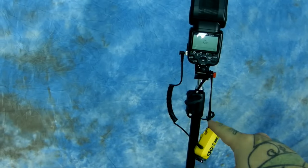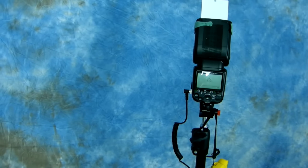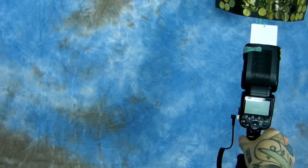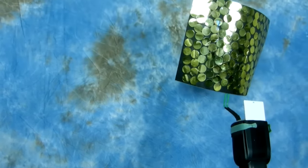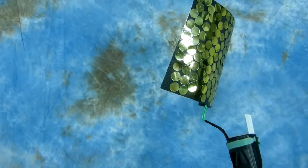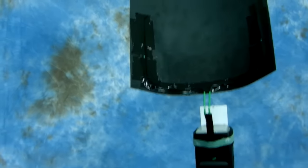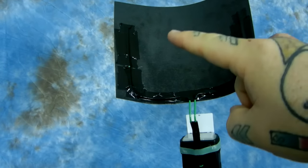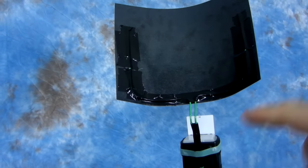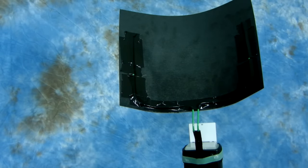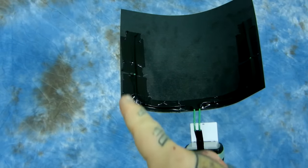...a Nikon speedlight. There's my little pocket wizard, of course, and I have it on a cheap little light stand. Let me turn the unit around here. Right on the back here I actually have a piece of wire using industrial duct tape to hold it, and then I bent the wire to give the unit a parabolic shape.